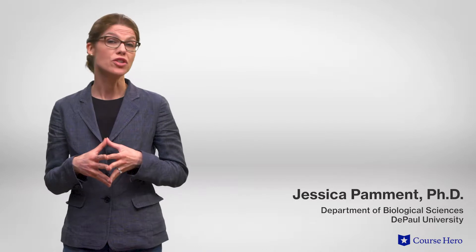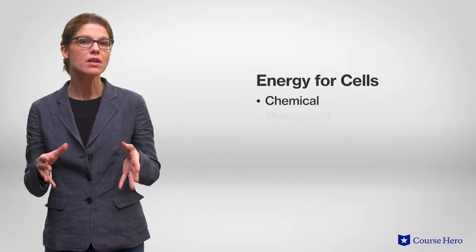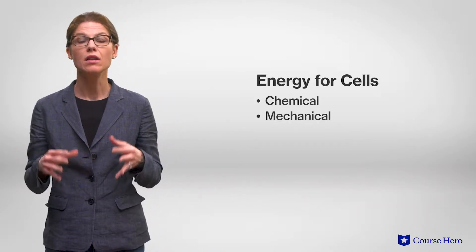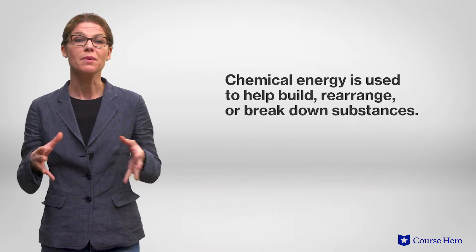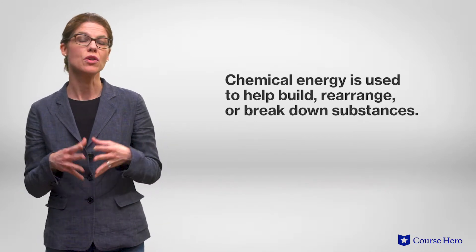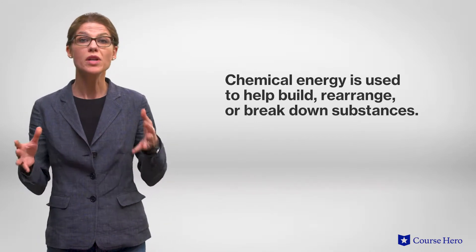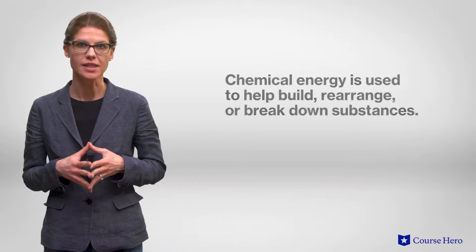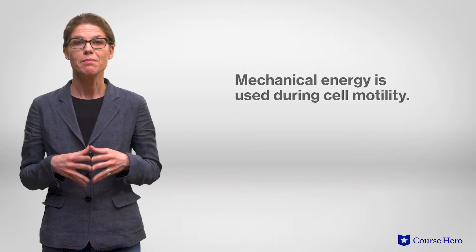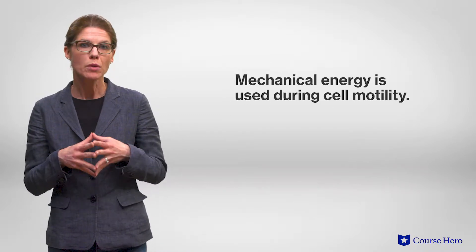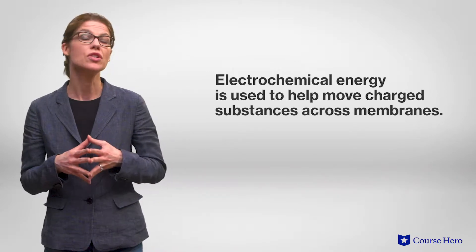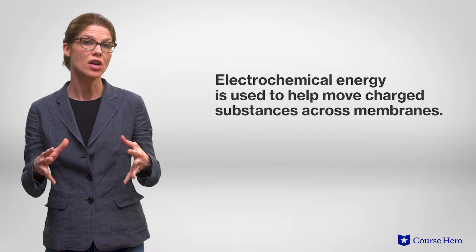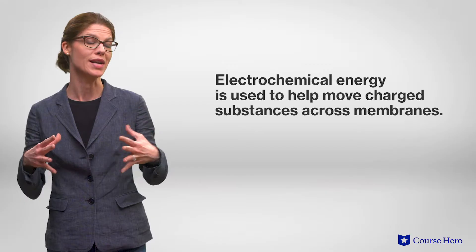All cells need energy to do work. This energy can be in the form of chemical, mechanical, or electrochemical energy. For example, chemical energy is used by cells to help build, rearrange, or break down substances. Mechanical energy is used during cell motility, and electrochemical energy is used to help move charged substances across membranes.